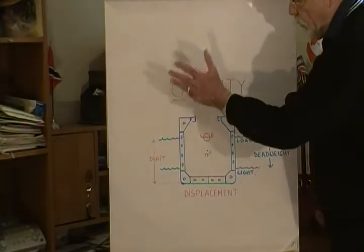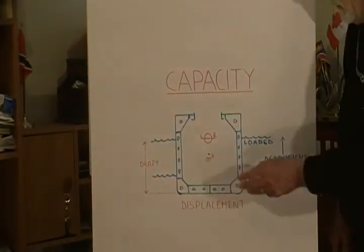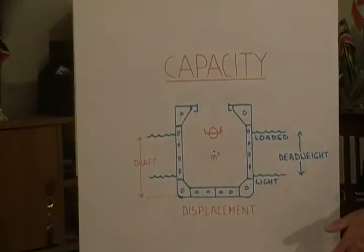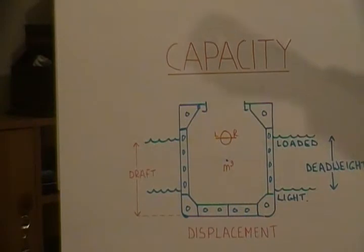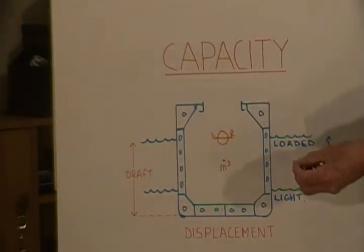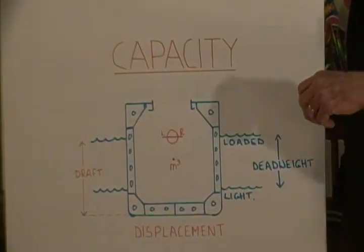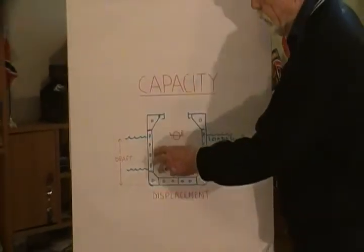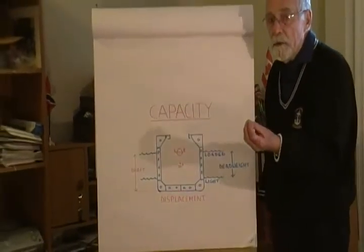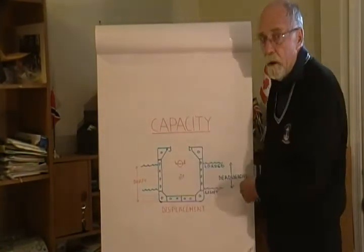We're going to cut the ship in half now and have a look at it transversely. The inside of the ship has a specific cubic, which is either what we call grain cubic or bulk cubic. So if we know the stowage factor of a particular type of cargo, we can work out how much will go in there. That's capacity by cubic.